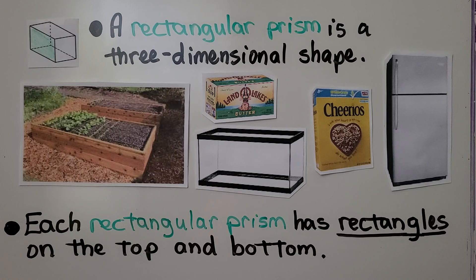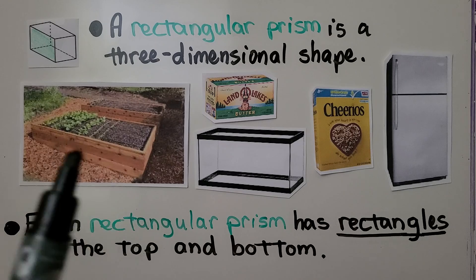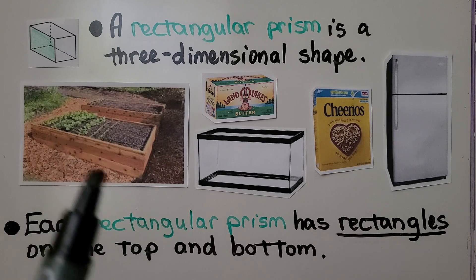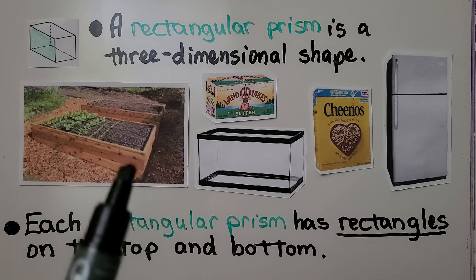A rectangular prism is a three-dimensional shape. Each of these is a rectangular prism, even this raised garden. It's in the shape of a rectangle. It's got length, width, and height.